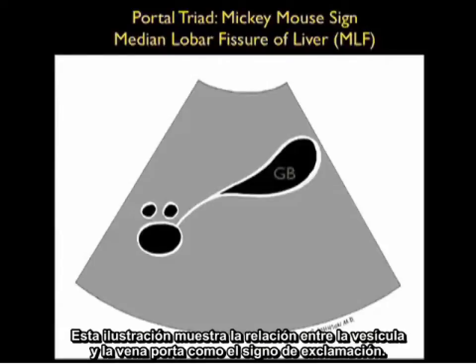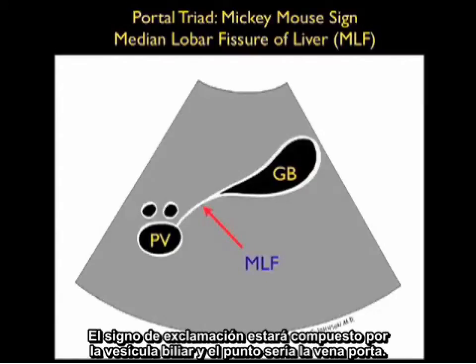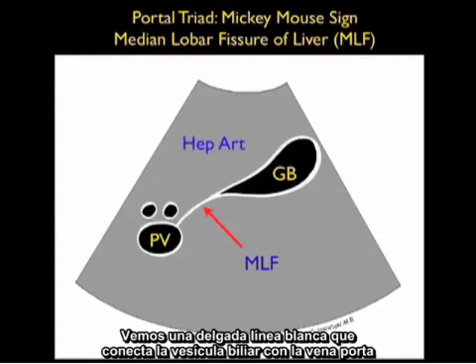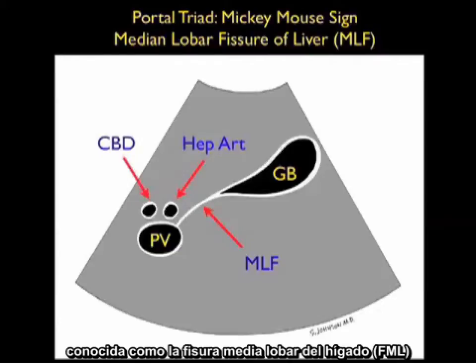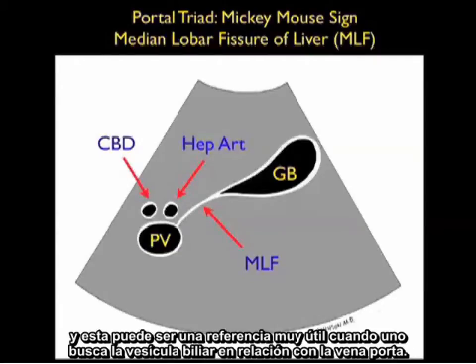Here's an illustration showing the relation of the gallbladder to the portal vein, known as the exclamation dot sign. The exclamation is made up by the gallbladder and the dot is the portal vein. We see a thin white line connecting the gallbladder to the portal vein known as the median lobar fissure of the liver, which is a helpful landmark when looking for the gallbladder in relation to the portal vein.